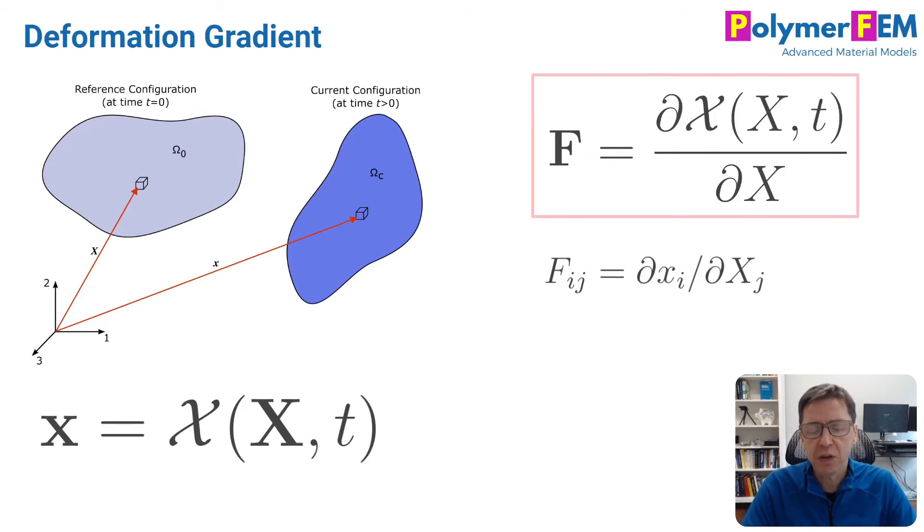The whole idea here is the deformation gradient, because just the displacement of a body by itself doesn't cause stresses or strains. What we care about is the relative change of deformation from one point to a neighboring point over time, and that's the deformation gradient. It's the partial derivative of this function x with respect to the initial configuration. The function depends on the initial location and time, and we're taking the partial derivative with respect to the initial location.